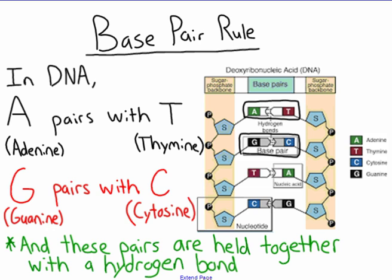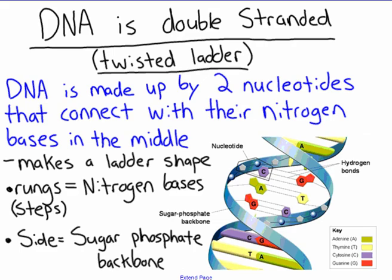These base pairs are held together in the middle by hydrogen bonds. Hydrogen bonds go back to our chemistry unit — that's what holds two water molecules together, so these are overall pretty weak bonds. Because of that, the DNA is able to unzip; it can zip up and unzip very easily because the hydrogen bond is relatively weak.